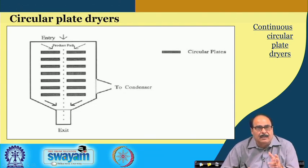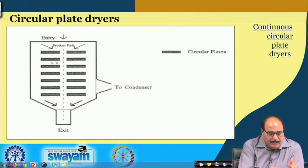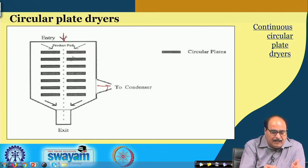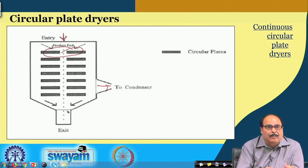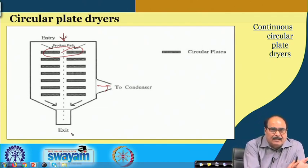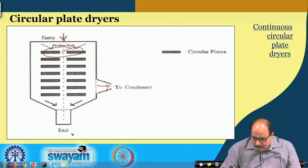The circular plate dryer has circular heating platens with an assembly for condensers. The product enters and slides onto the circular plates, moving from one plate to another plate until it finally comes to the bottom, by which time it is dried, and then the exit lock is opened. The movement of the belt, speed, temperature, and pressure are all properly maintained. This is a schematic presentation of a circular plate dryer.